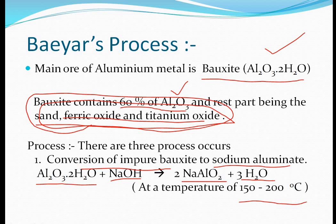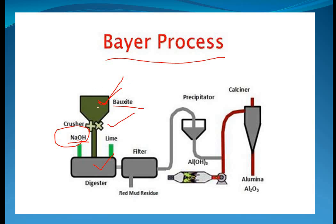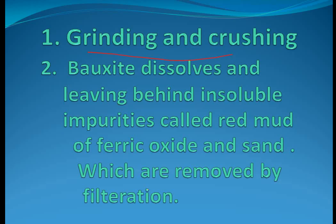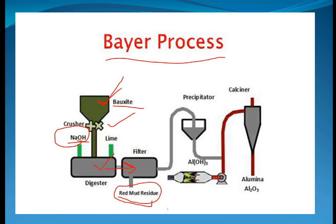After the conversion of bauxite to sodium aluminate by crushing and adding NaOH, we filter the sodium aluminate. During filtration, a substance called red mud is left behind. Red mud is simply the impurity portion containing ferric oxide and sand — insoluble impurities that are removed by simple filtration. So two impurities, ferric oxide and sand, are removed at this stage.